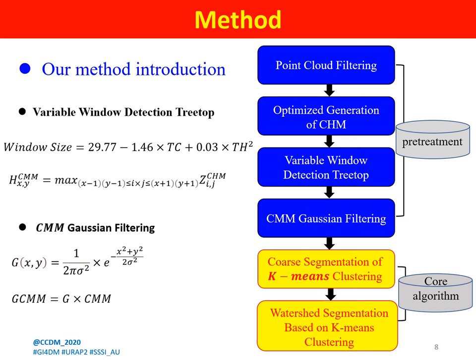The experiment process of this article is shown in the figure. First, predict the canopy size window. This experiment finds the non-linear relationship between tree height and tree crown to get the variable window size. Tc is the crown diameter of each individual tree, and Th is the average tree height of the individual single tree. Then the CHM model is generated. In this paper, the CHM image is reconstructed based on the point cloud operation, and the value of each grid unit is replaced with the maximum value of the point cloud in the neighborhood to obtain the maximum crown height model.